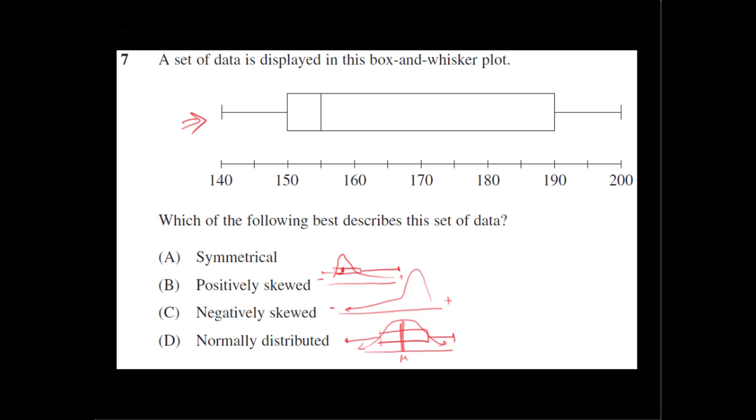Okay, the symmetrical one again—it will look similar to D. It would be just similar. So it would be a box with the mean in the middle.